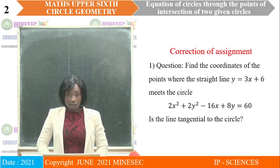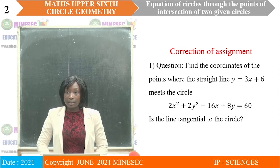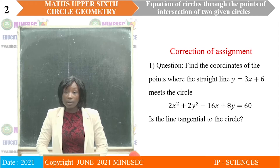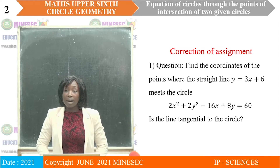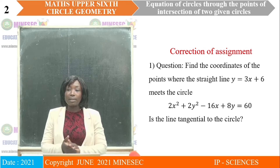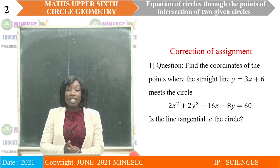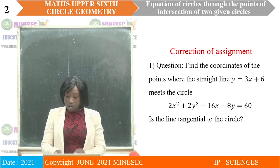Question: Find the coordinates of the points where the straight line y = 3x + 6 meets the circle 2x² + 2y² − 16x + 8y = 60. Is the line tangential to the circle?